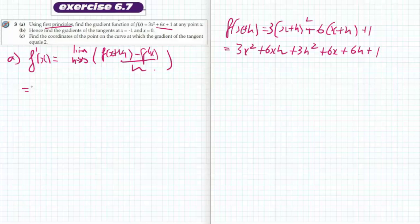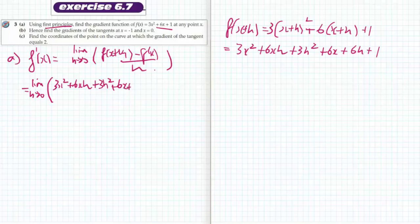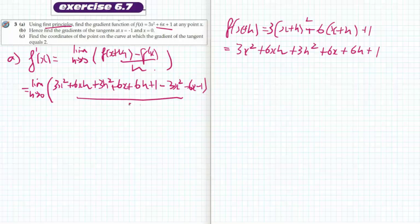So it's going to be the limit as h approaches 0 of 3x squared plus 6xh plus 3h squared plus 6x plus 6h plus 1 minus 3x squared minus 6x minus 1, all over h.